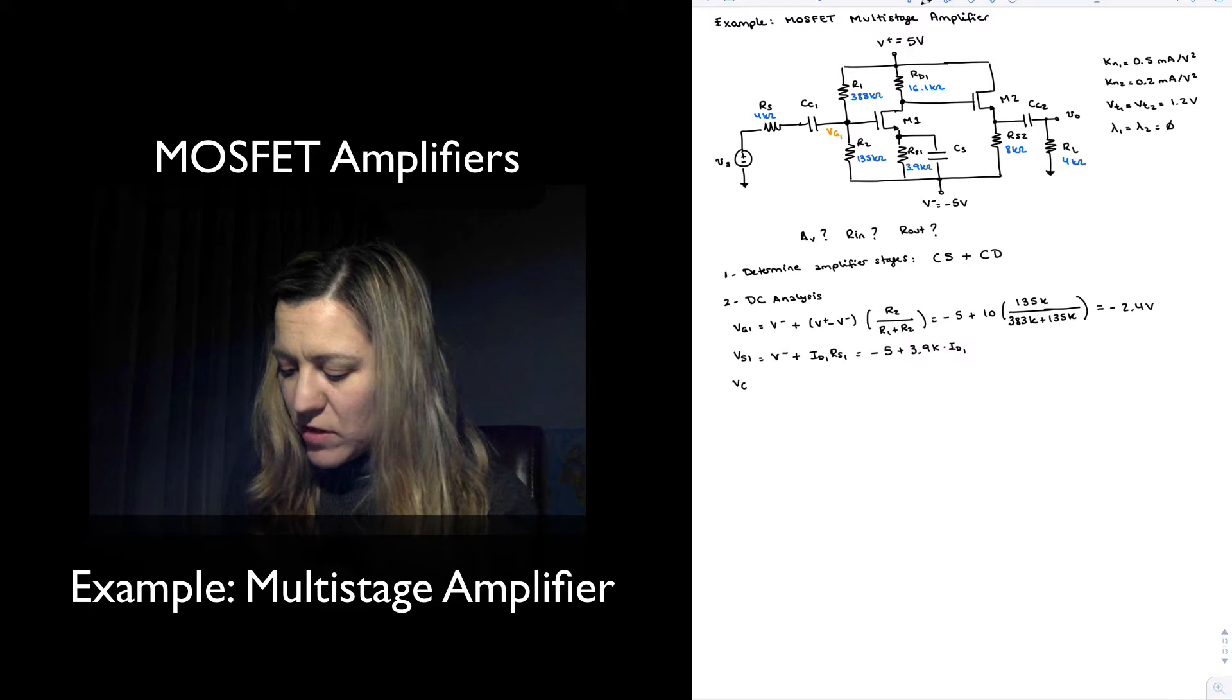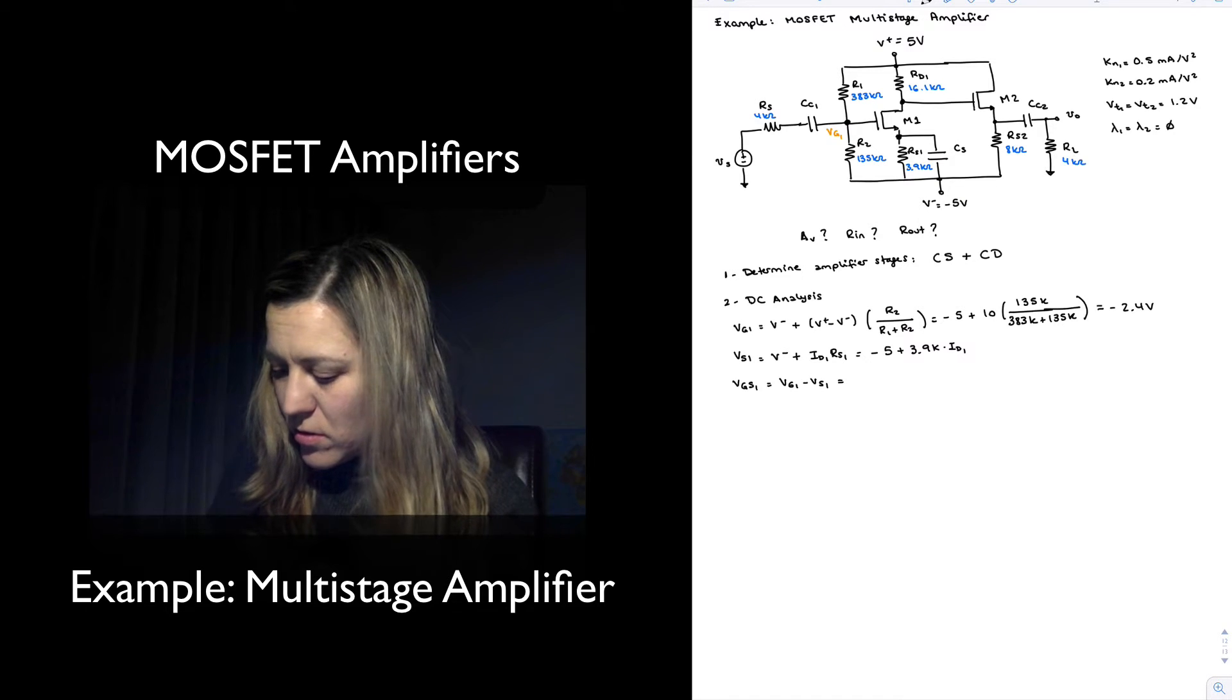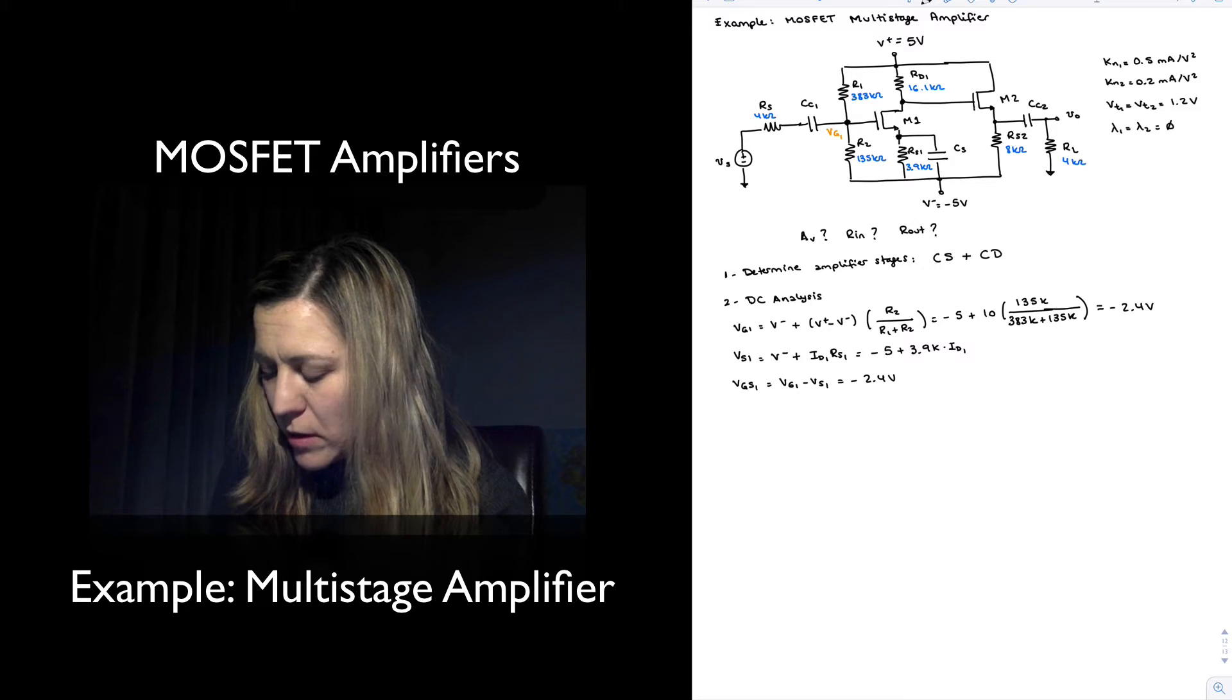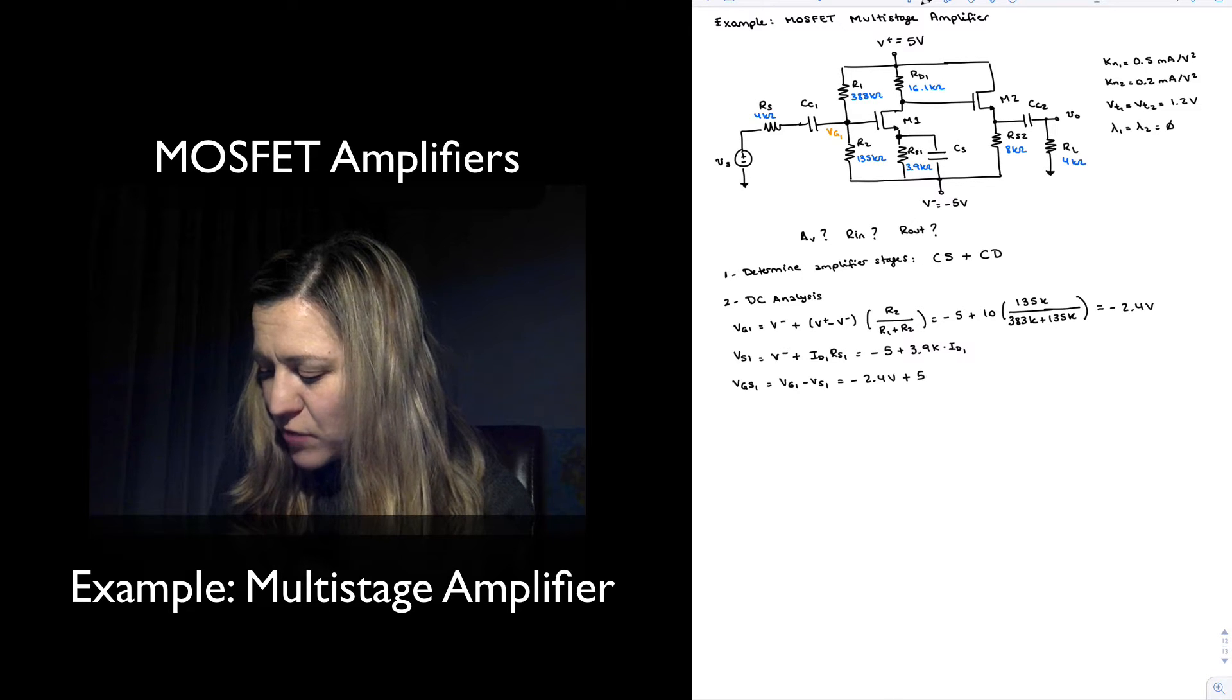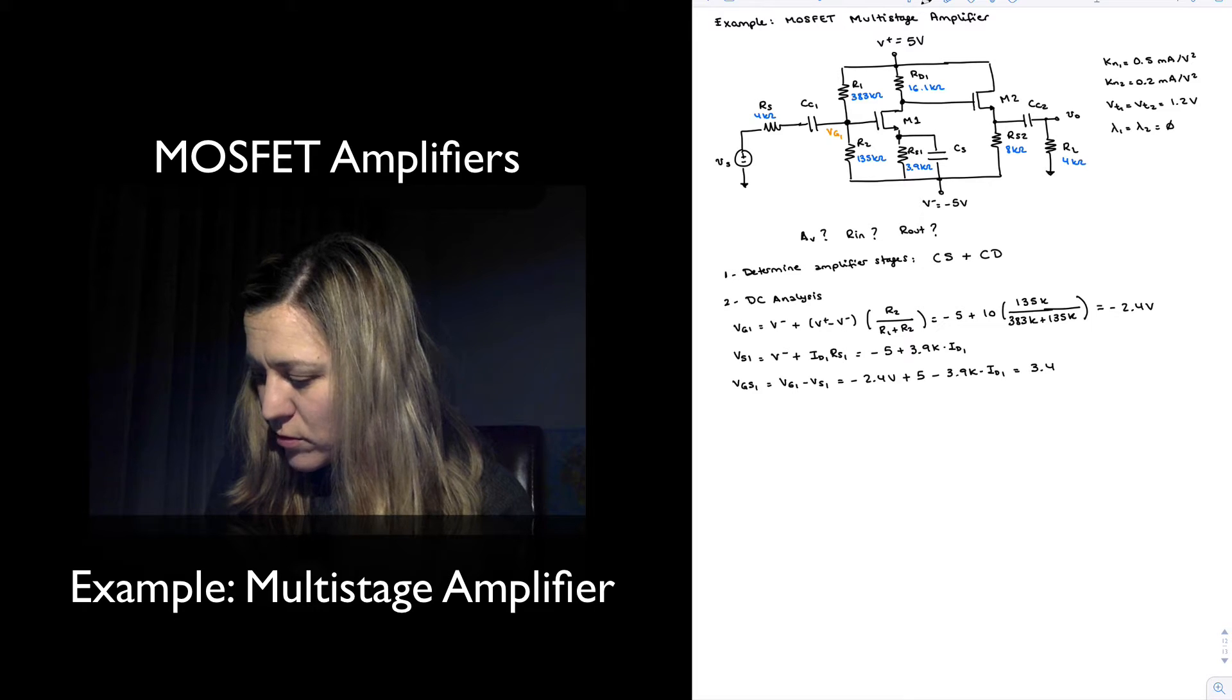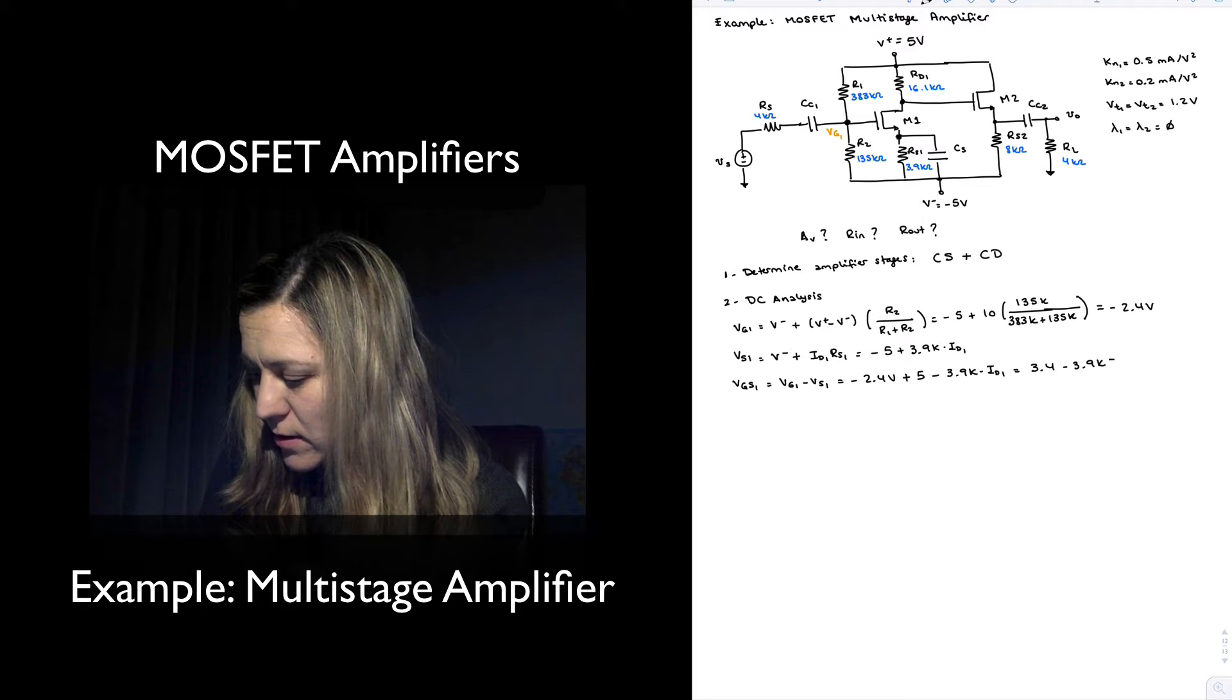Now my VGS1 is equal to VG1 minus VS1, which is negative 2.4 volts minus minus 5 plus 5 minus 3.9k times ID1, or 2.6 volts minus 3.9k times ID1.